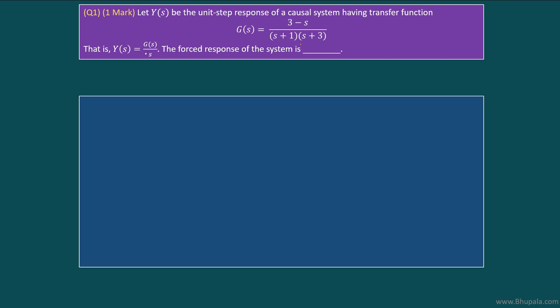The Laplace transform output is given by Y(s) which is equal to G(s)/s. The question is we have to find out the corresponding time domain signal which is called forced response of the system. The forced response of the system is the time domain signal of Y(s), so to find y(t) we have to find the inverse Laplace transform of Y(s).